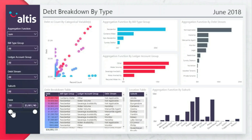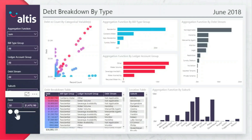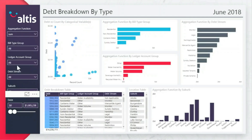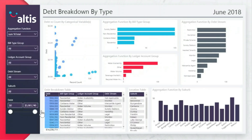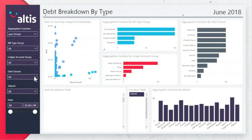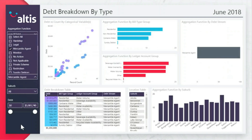Break the debt down by key components and investigate patterns for both high and low debt situations across a range of metrics. Filter by categories to find relationships between key components — for instance, mercantile agent might be a debt stream of interest.